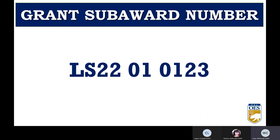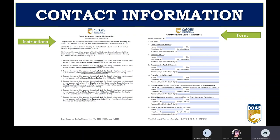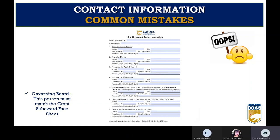The grant subaward contact information form: remember to use the most updated forms from the Cal OES website and include the entire nine-digit zip code. On lines 1 and 2, the grant subaward director and financial officer must be different people. On lines 2 and 5, the financial officer and executive director must also be different people. The chairperson listed on line 7 cannot be listed again in any of positions 1 through 6. Leave the grant subaward number section blank — it will be filled in if you are awarded. The official designated by the governing board on line 6 must be the person who signs the grant subaward face sheet.